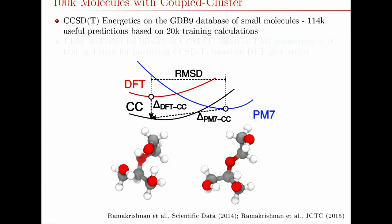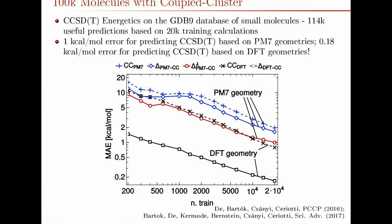In a bit more detail: what was done was to take the GDB9 database, which contains 134,000 small molecules, and relax their structure using either DFT or an empirical PM7 model, then calculate the coupled cluster energies of them. You could take the DFT relaxed structure and learn the coupled cluster energy, or the PM7 relaxed structure and learn the coupled cluster energy, or perhaps more interestingly, you could take the DFT structure and learn the error — the coupled cluster energy minus the DFT energy — or similarly for PM7.